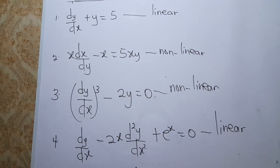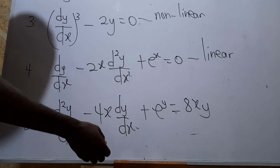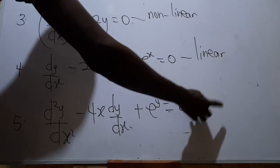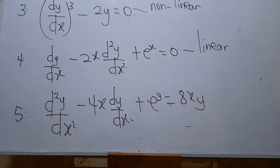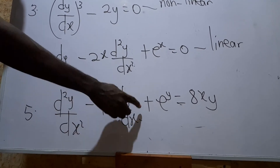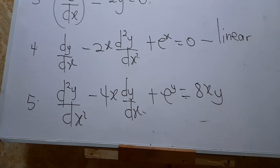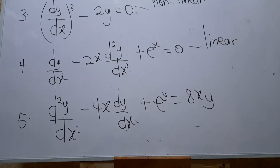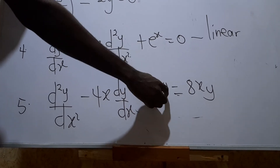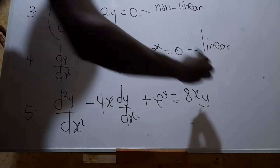For the fifth equation, the derivatives are of degree 1 and the dependent variable is of degree 1 — condition one satisfied. Checking for products: there is a product involving a variable, but that variable is an independent variable, not dependent — condition two satisfied. Checking for transcendental functions: there is a transcendental function here, and the variable involved is a dependent variable. That disqualifies this differential equation from being linear. So we say it is non-linear.